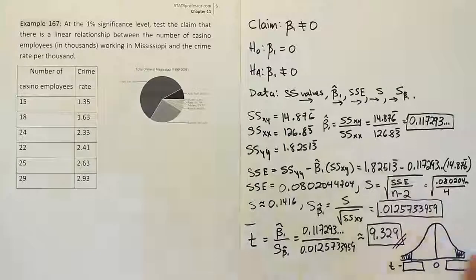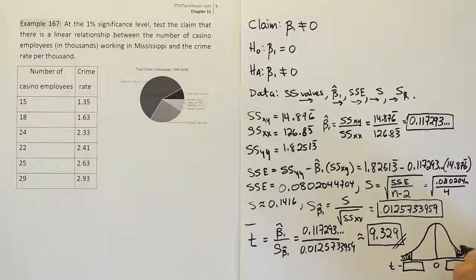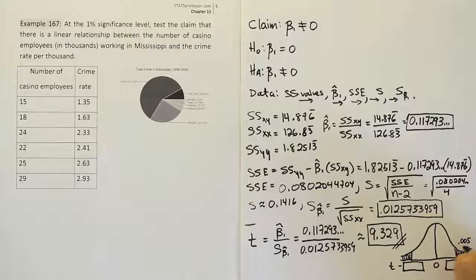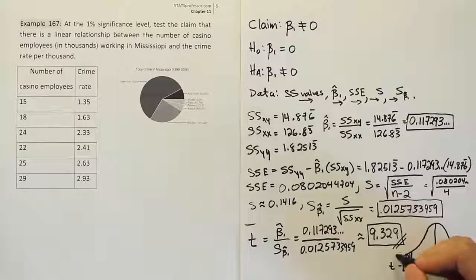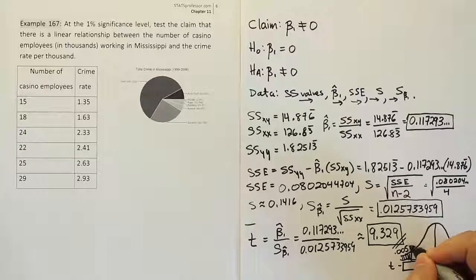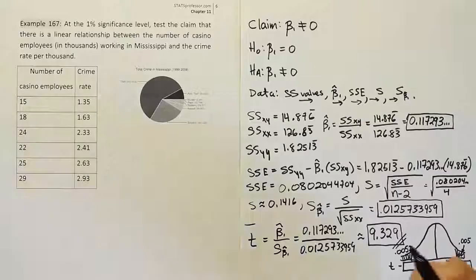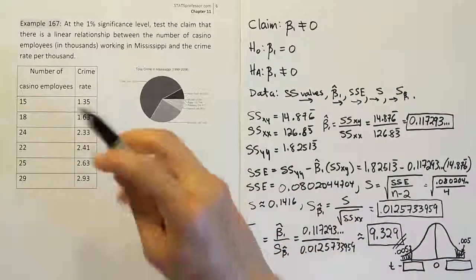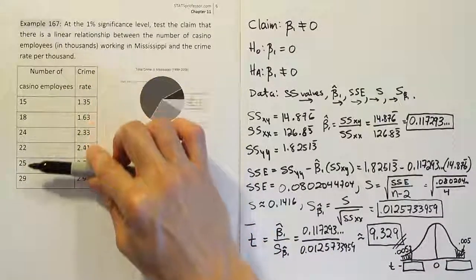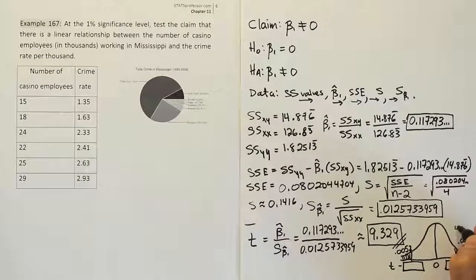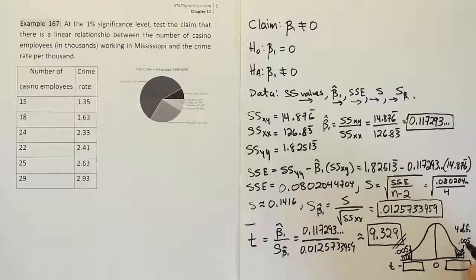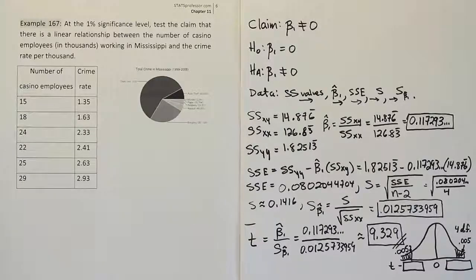So remember that this is a two-tailed test because Hₐ has a not equal to symbol. So we'll have a rejection region here and we'll have a rejection region here. We're going to have two values. One will be negative and one will be positive, of course. And those are the critical values that we need to find. Lastly, we're going to think about alpha in the problem. The alpha is 1%. That means it's only 0.005 in each one of these tails. 0.005 in each tail. Now, because of that, the last thing we want to do is figure out the degrees of freedom. What's the degrees of freedom here? Well, remember what we used for n. The n was 6 because we had 6 pairs of values. So the degrees of freedom is only 4.